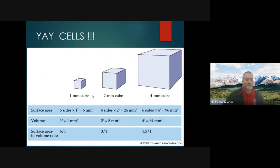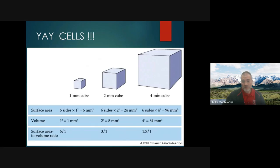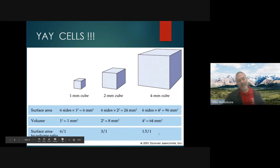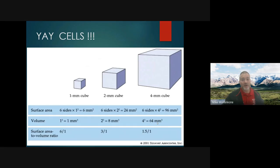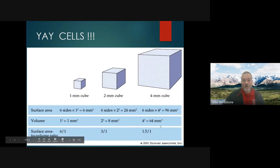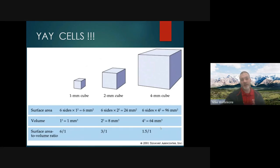The small cell has a surface area to volume ratio of six when we calculate it. The big cell, even though the surface area and volume are both bigger, when you divide the two, you only get 1.5. Bigger cells have a smaller ratio because the numerator increases by the radius squared whereas the denominator — the volume — increases by the radius cubed. So the denominator gets bigger quicker, and the value of the fraction keeps going down as the radius of the cell goes up.